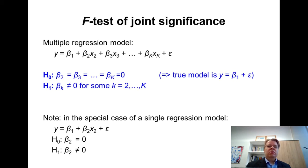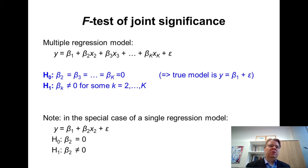In the case of the single regression model, this just boils down to testing the significance of the beta 2 coefficient. So the idea of joint significance only becomes relevant in the case of multiple regression with many explanatory variables. I will come back to the connection to the single regression case later in this video.